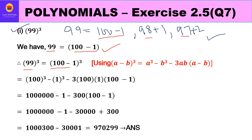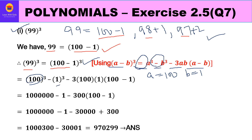So 99 cubed can be written as (100 - 1)³. This clearly resembles our identity (a - b)³ = a³ - b³ - 3ab(a - b). Comparing, a is 100 and b is 1. So we write: 100³ - 1³ - 3 × 100 × 1 × (100 - 1). Now 100³ gives 1,000,000, 1³ is 1, and 3 × 100 = 300, giving 300 × (100 - 1).